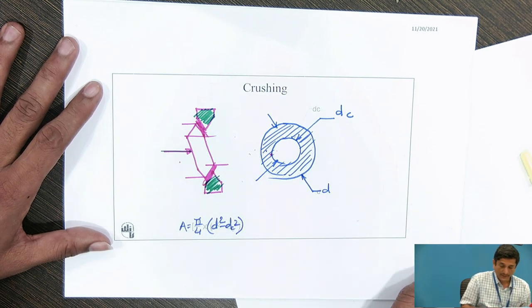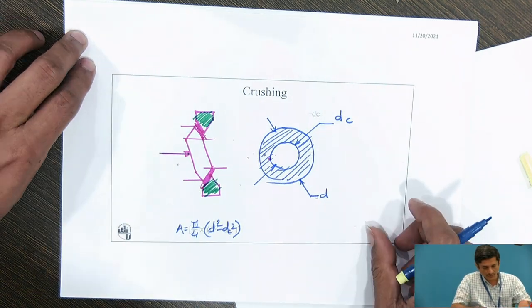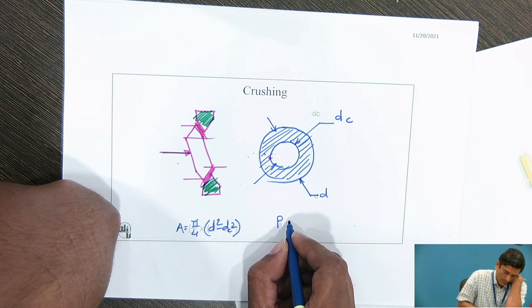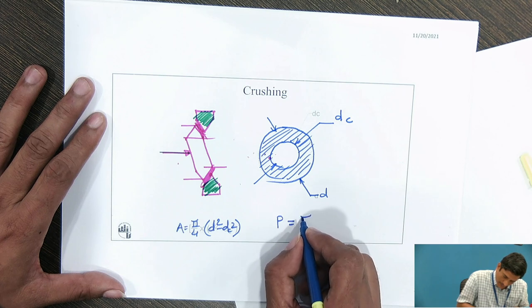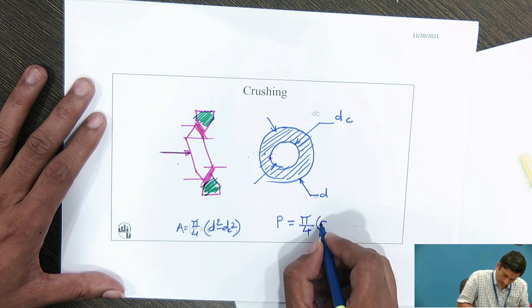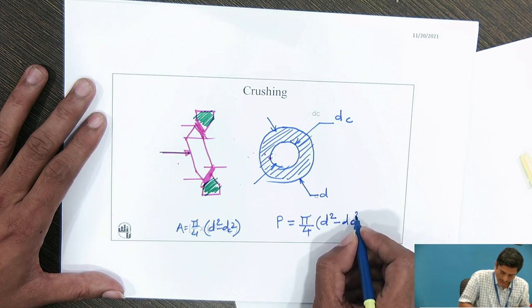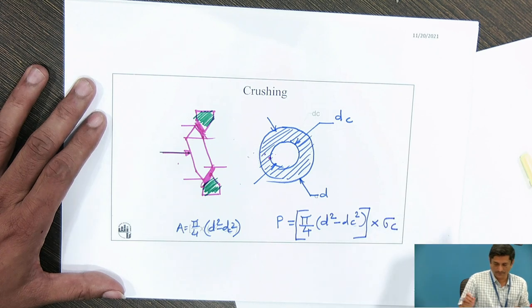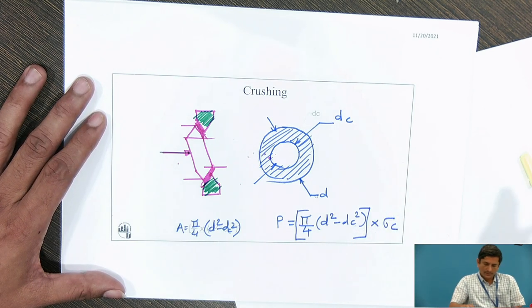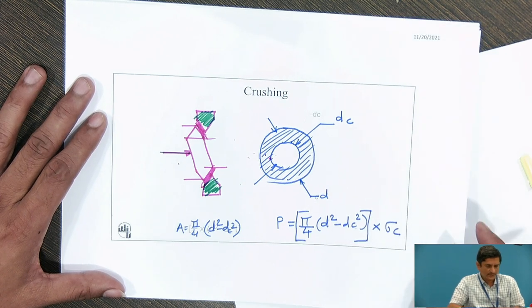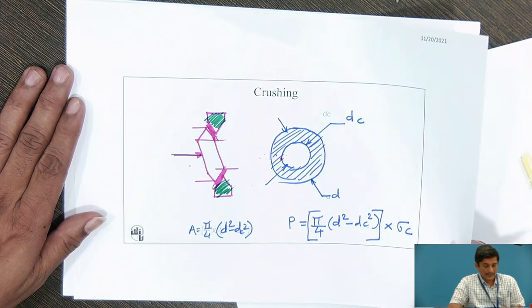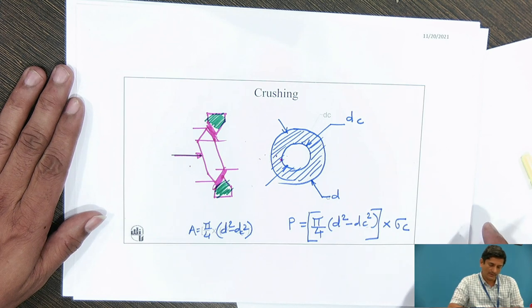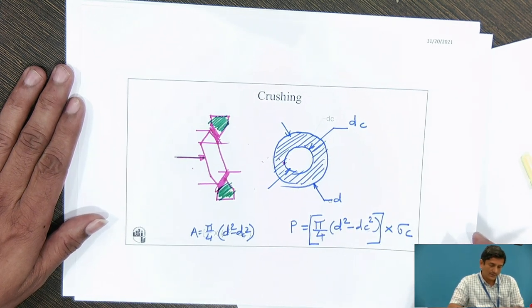And then if I want to design this rod or this screw thread under crushing, I need to design it as force P equals pi by 4 d square minus dc square, is the net area available. This failure is governed by crushing stress. And if we make this safe under crushing, we can identify what kind of other failure will be there if the component is safe in crushing.